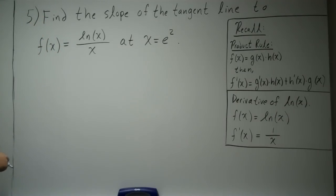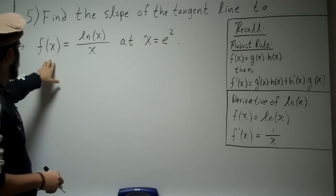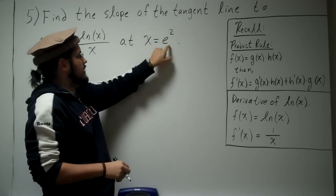Alright, now we're working on problem 5. Problem 5 states, find the slope of the tangent line to f(x) = ln(x)/x at x = e².